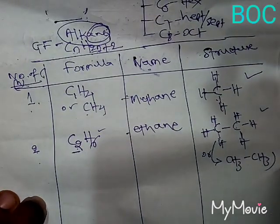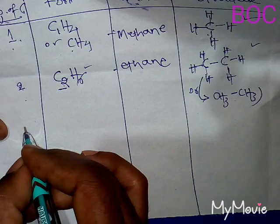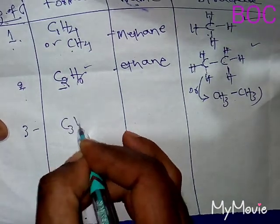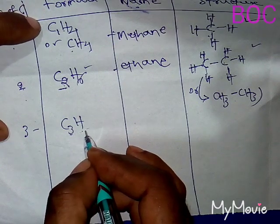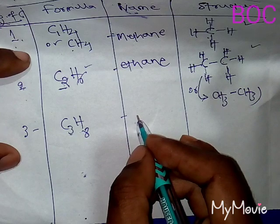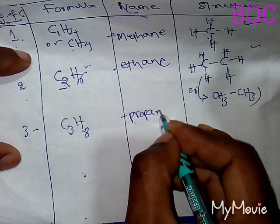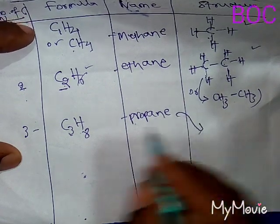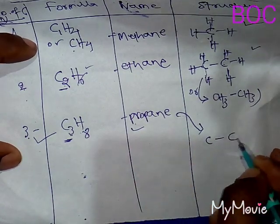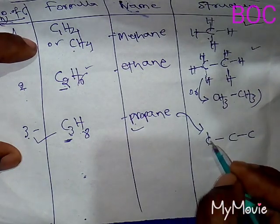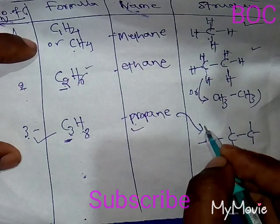Next, if the number of carbon atoms is 3, then hydrogen is 2×3+2 = 8, giving C3H8. The name: as there are 3 carbon atoms, the prefix is 'prop' and the suffix is 'ane' for the alkane group, so the name is propane. For the structure of propane or C3H8, put 3 carbon atoms in a line — carbon is tetravalent forming four bonds — and put hydrogen atoms accordingly.